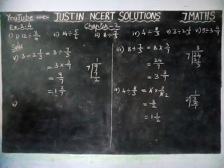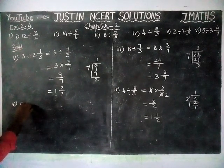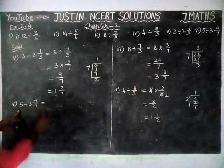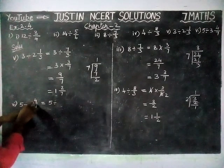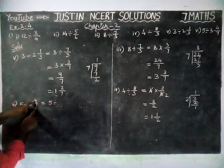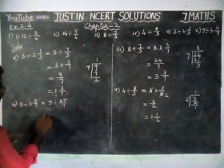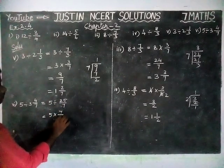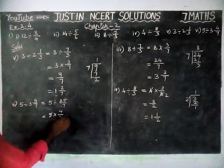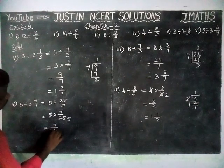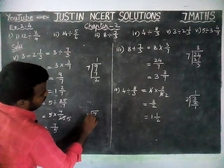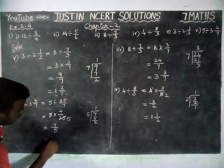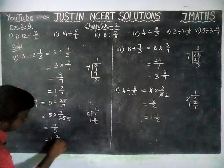And then sixth question: 5 divided by 3 and 4/7 is equal to. Here also, the divisor is in mixed fraction, so we convert it into improper: 3 sevens are 21, plus 4 is equal to 25, giving 25/7. Now we change the division symbol and find the reciprocal: 5 into 7/25. Here we can simplify by 5: 1 five is 5, 5 fives are 25. We get 7/5. Since this is an improper fraction, 7 divided by 5: 1 five is 5, remainder 2. So the answer is 1 and 2/5.